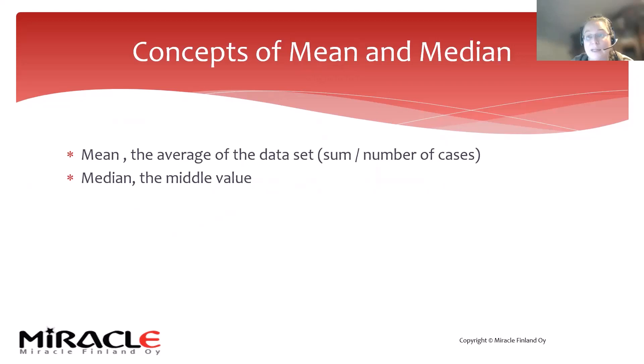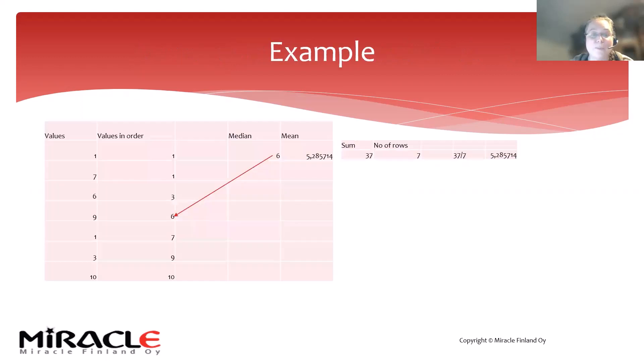Mean is affected by outliers. If my data has a lot of outliers, mean is affected by that, but median is not. This is something you should know when deciding what to use for your measurements.